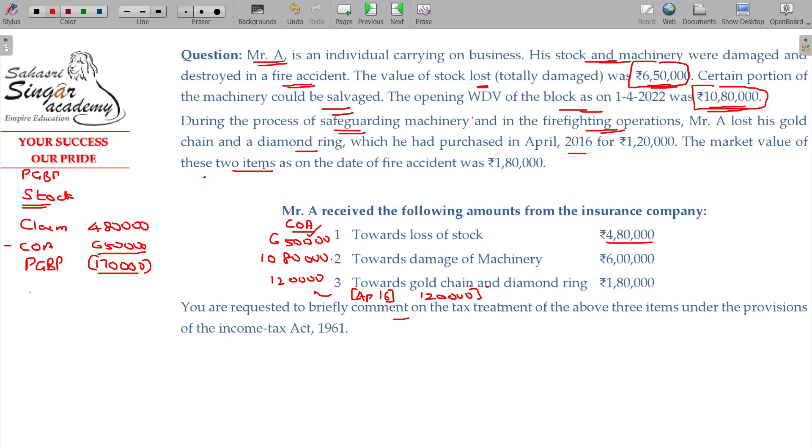Machinery. Okay, machinery case. We have to follow Section 32. Opening WDV of the block being 10 lakhs 80,000 rupees minus insurance claim received 6 lakhs 50. The value currently. Okay.